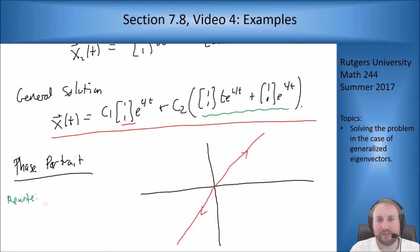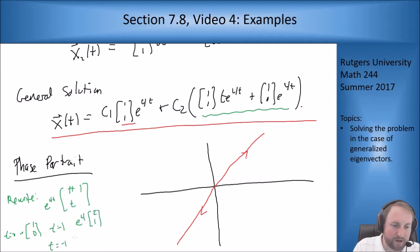Now let's look at this guy. To see what happens, I'll rewrite this by factoring out e^(4t). I get e^(4t)[t+1; t]. At t=0, I am at e^(4t)=1, I am at [1,0]. At t=1, I am at e^4[2,1]. At t=-1, I am at [0,1]e^(-4). So I'm starting at (1,0), which is over here. At t=-1, I'm at (0,1)e^(-4). At t=1, I'm at (2,1) but really far away.